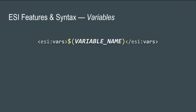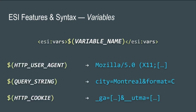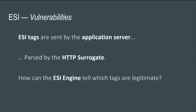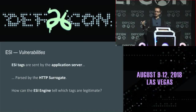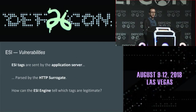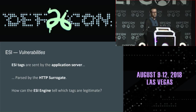Our second feature before delving into exploitation is ESI variables. It's a very simple feature with no XML attributes, and the content of the tags gets expanded to access metadata about the current HTTP transaction. So you're able to access the HTTP user agent, cookies, query strings — basically anything relating to the current HTTP transaction. Now we know about ESI includes and ESI variables, and that the tags are sent by the application server and parsed by the caching server.